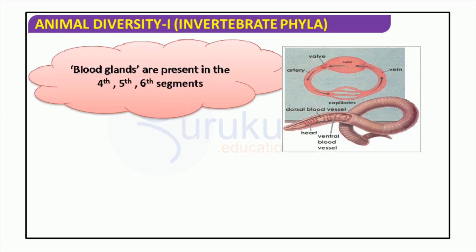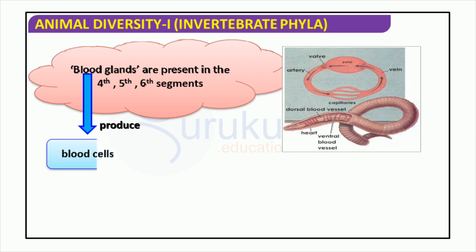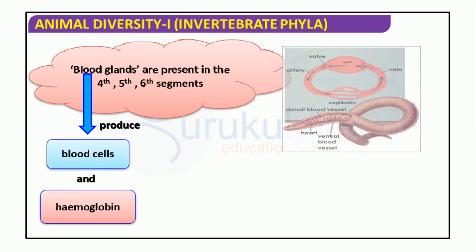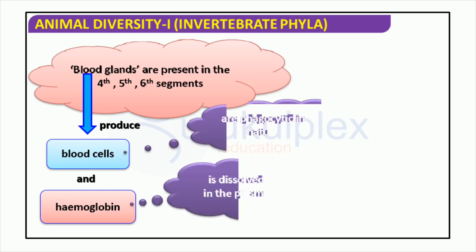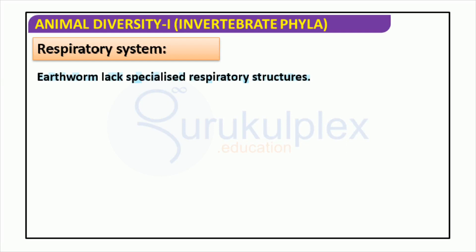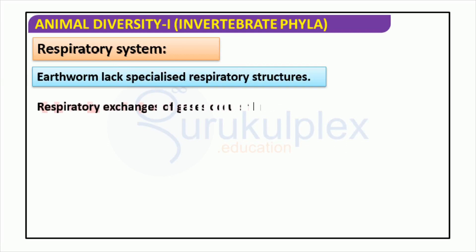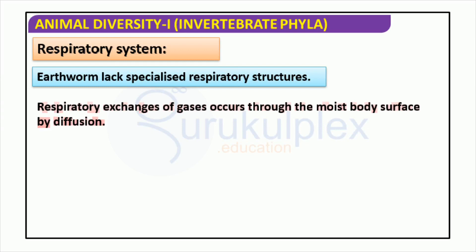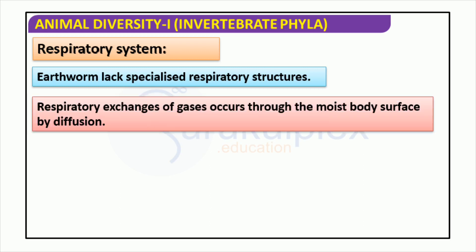Examining animal diversity I, we see that blood glands are located in the 4th, 5th, and 6th segments of invertebrates. The blood cells have a phagocytic nature and hemoglobin is produced and dissolved in the plasma. Additionally, a dorsal artery and a ventral vessel transport the blood within the body. Gaining knowledge on the distinct processes of invertebrates can help us discover more about evolution. The earthworm does not possess any specialized respiratory structures; instead, it relies on its moist body surface to exchange gases by diffusion. This remarkable adaptation gives insight into their evolutionary history.